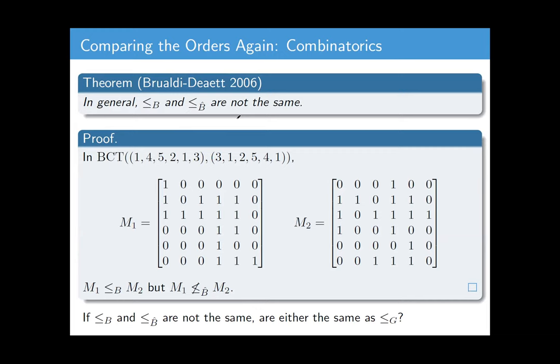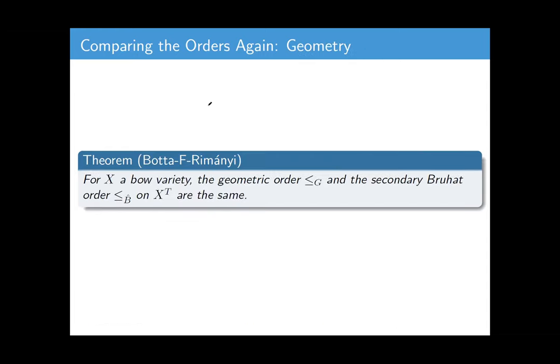But now the big question is, if these two combinatorial things are not the same, then are either of them the same as the geometric order? That's the big question. And so our recent theorem, in a paper with me, Richard Rimányi, and Tommaso Botta, is that for a bow variety, this geometric order is actually the same as the secondary Bruhat order. This is the one that had those L2 to I2 interchanges. That's actually the correct description for bow varieties.